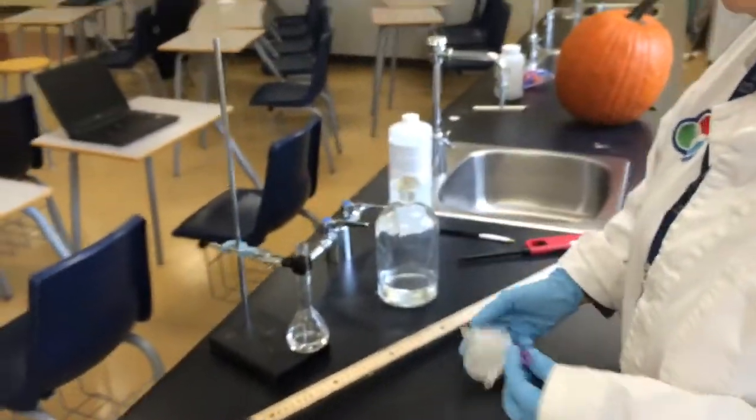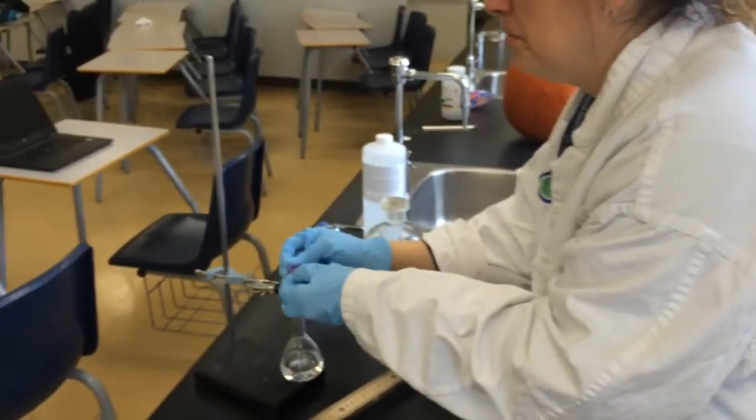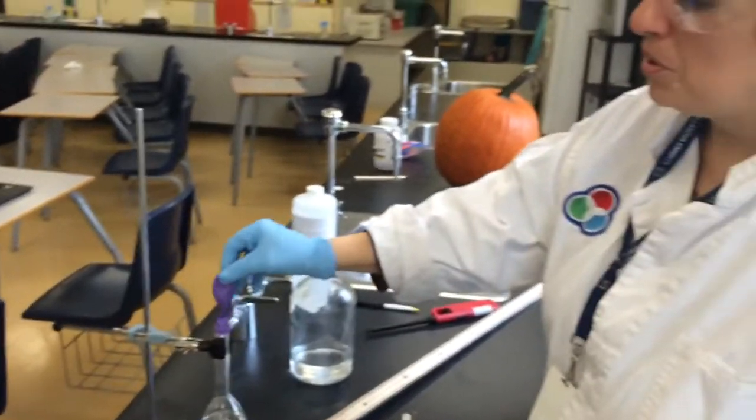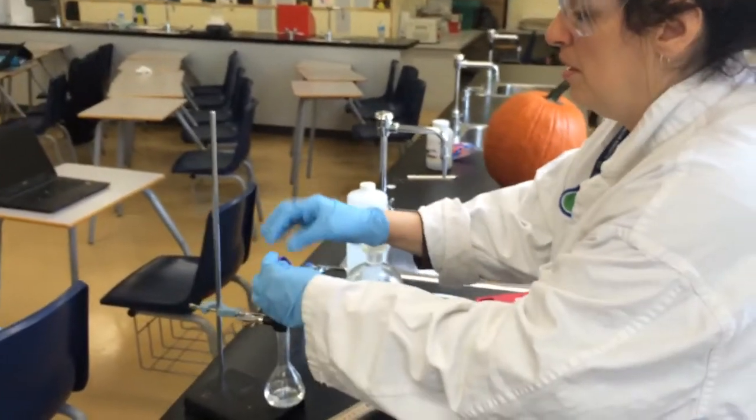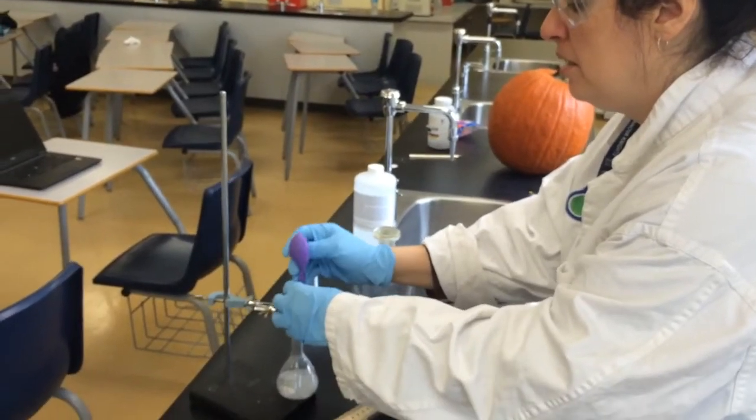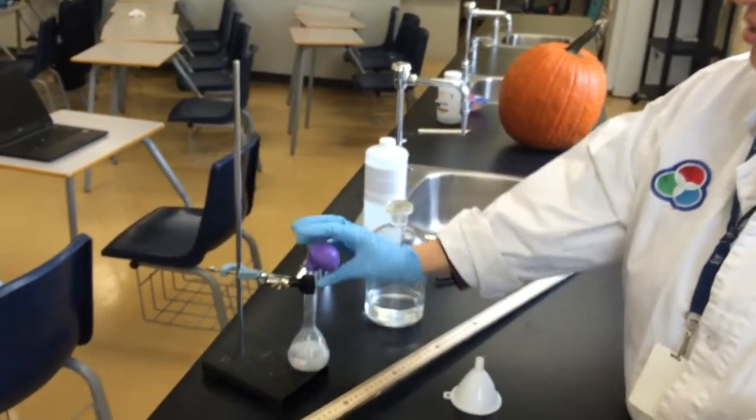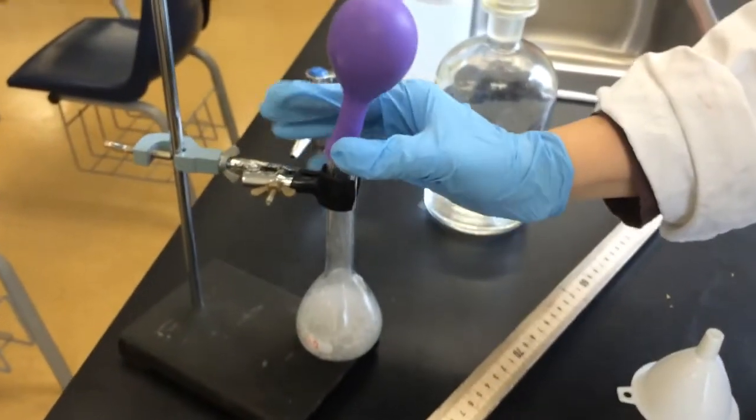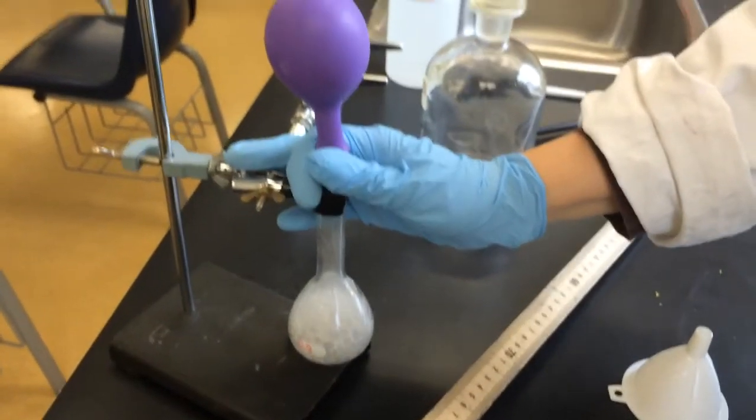Okay, so in here we have acid and we have metal that's inside the balloon. To make sure that we capture all of the gas that's going to come out, we just pour it into the balloon and then drop it down. And if you come closer, you can see the hydrogen gas is starting to form. And that's what we're capturing in this balloon right now.